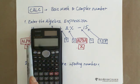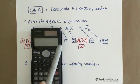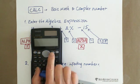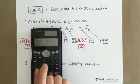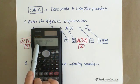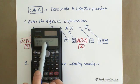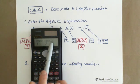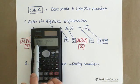First of all, this button is working with both basic math and complex numbers. So in mode, COMP is basic math, CMPLX is complex number — it works with both.